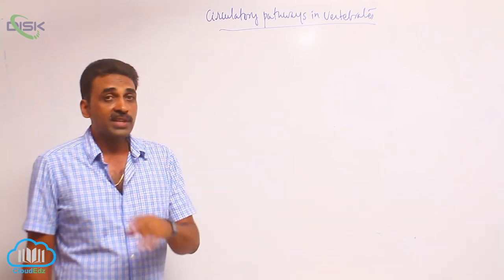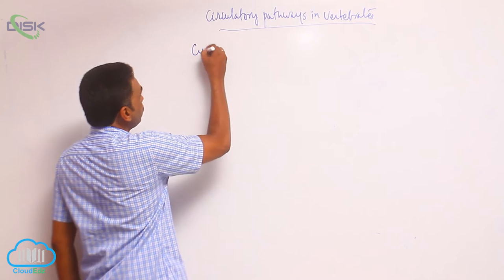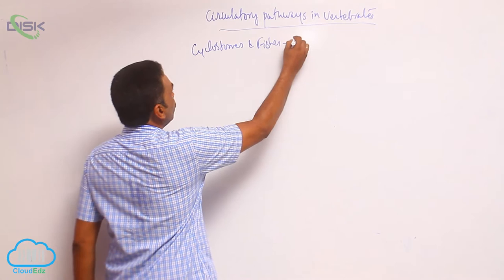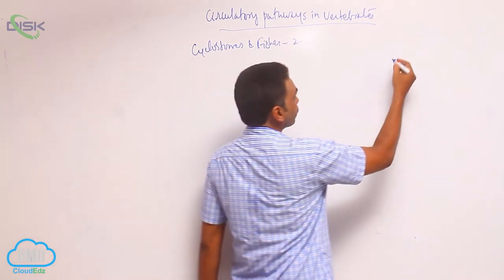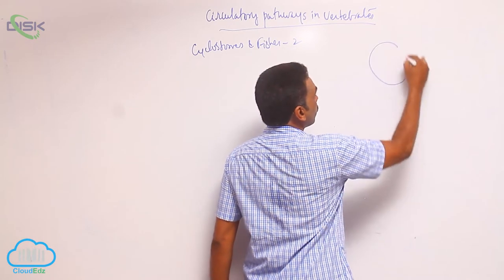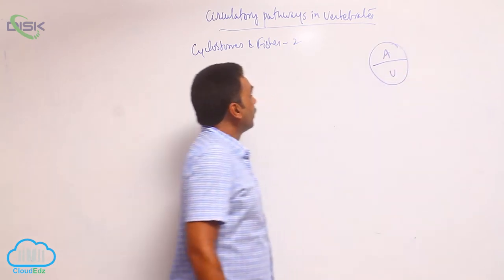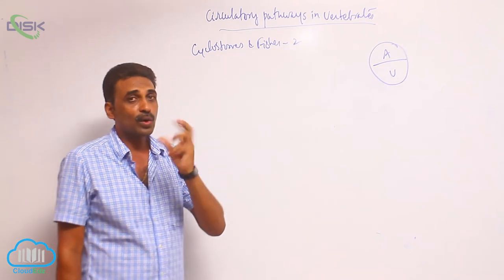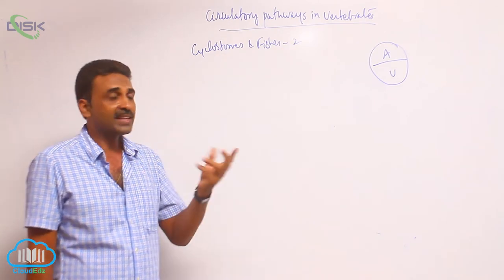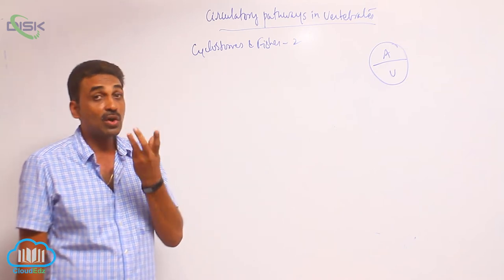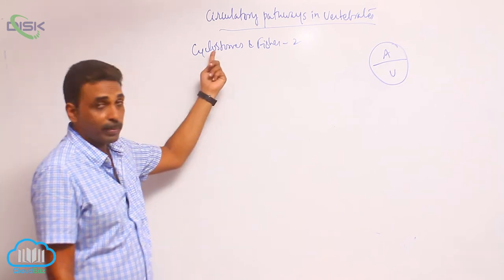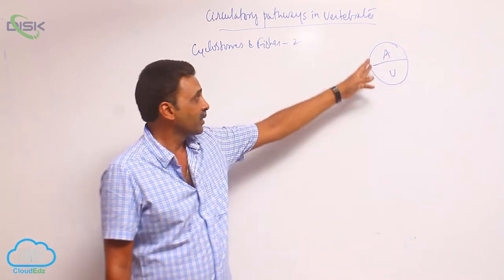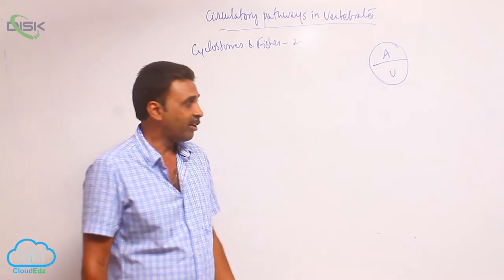In cyclostomes and fishes, there is a two chambered heart. Cyclostomata means cyclo - round, stoma - mouth; they are agnathous, jawless vertebrates with a round mouth, such as Petromyzon. In all fishes, we have only a two chambered heart, which includes one atrium and one ventricle.